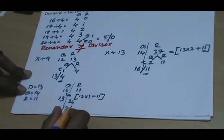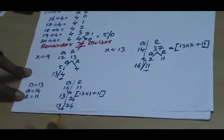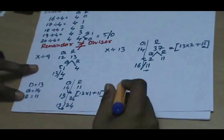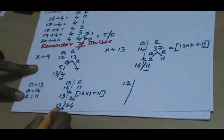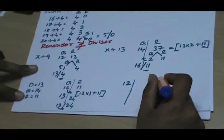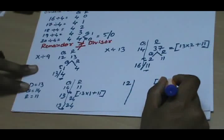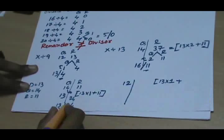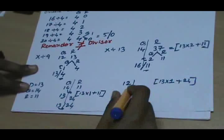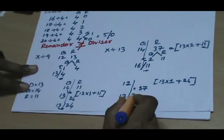Now suppose we obtain 24 as the remainder and still we want the remainder to be greater than 24. We can transfer one more quotient from the quotient side, so that will be left as 12. When one unit of quotient goes to the remainder side, that can be written as 13 multiplied by 1 plus the remainder 24, which equals 37. So the new quotient will be 12 and the new remainder will be 37.